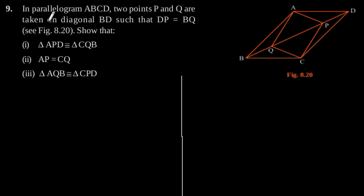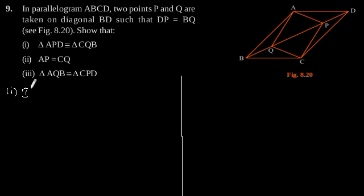Exercise 8.1, Question 9. In parallelogram ABCD, two points P and Q are taken on diagonal BD such that DP is equal to BQ, as shown in figure 8.20. Show that: first, triangle APD is congruent to triangle CQB.